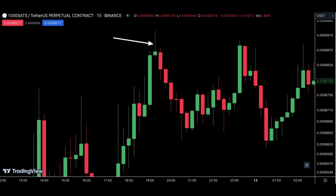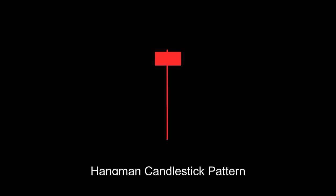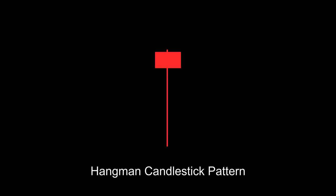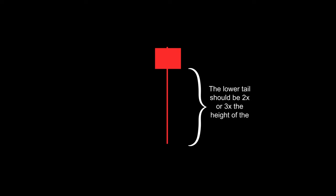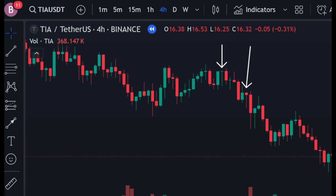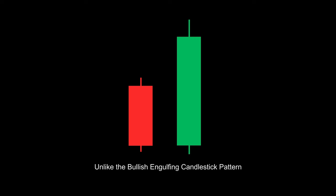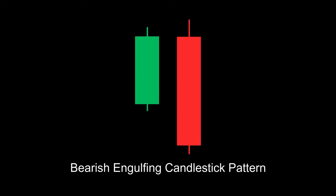The hanging man is a single candlestick pattern formed at the resistance of a trend. It is a black or red candlestick with a small body near the high, little to no upper shadow, and a long lower tail that should be two or three times the height of the body. The hanging man is considered a bearish candlestick and a potential uptrend reversal pattern — whenever you see it at the end of an uptrend, know that there is an incoming downtrend.